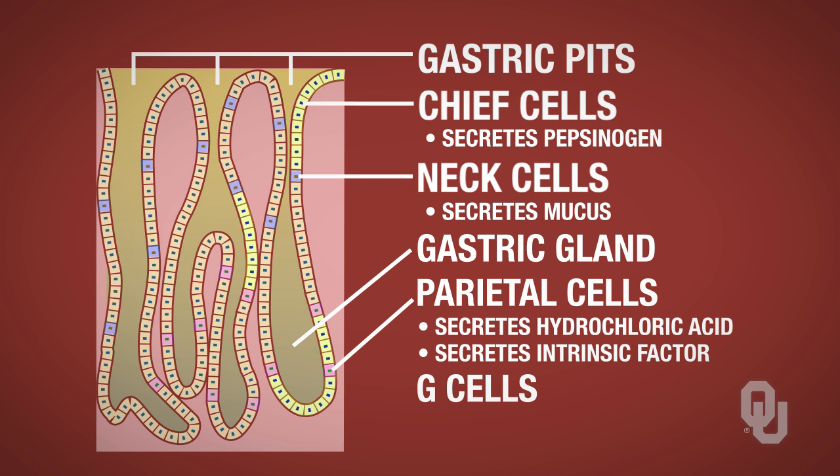The G cells secrete a hormone called gastrin. Gastrin is a hormone that is very important in the regulation of the gastrointestinal system.